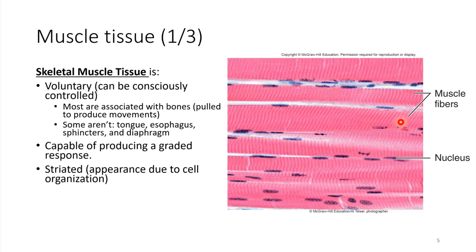That long horizontal section is called one muscle fiber. The way it is formed in the embryonic stage is that a bunch of cells fuse together, so we end up with one muscle fiber having multiple nuclei. Usually we think of one cell having one nucleus, but in the case of muscle tissue, we end up with a really long cell that has multiple nuclei due to how it was formed in the embryonic stage.